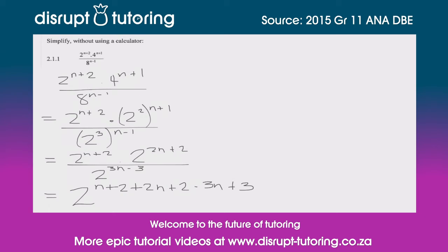From there we can start collecting our terms. So n plus 2n gives you 3n, minus 3n gives you 0.